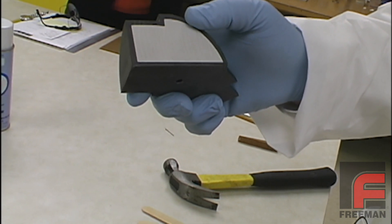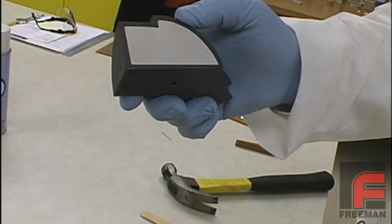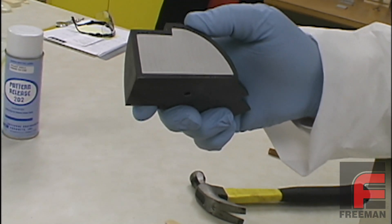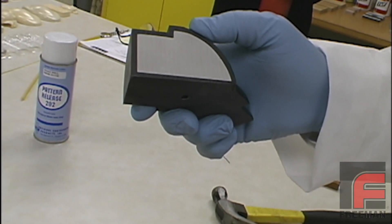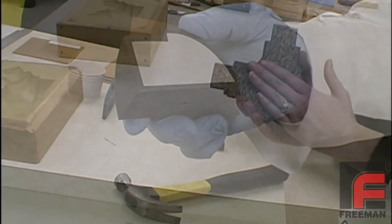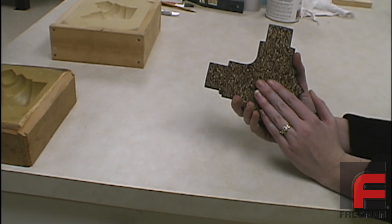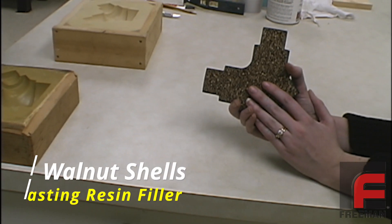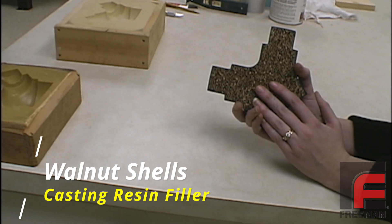Here again we show a cross section of the part that was previously surface cast. Many different materials can be used for the core, including wood, synthetic tooling board, epoxies, and urethanes. To further minimize the cost of the core, you can add fillers such as macrolite spheres or walnut shells shown here.